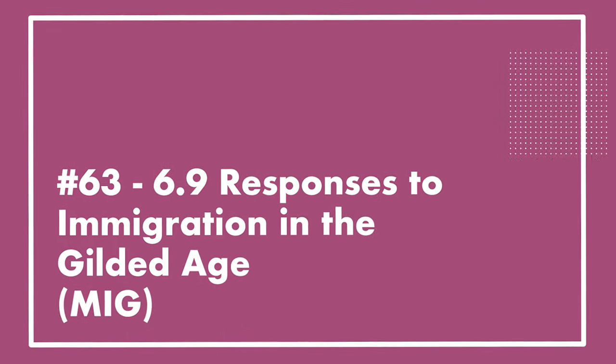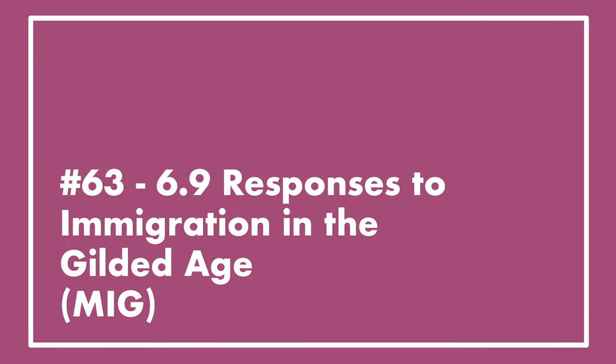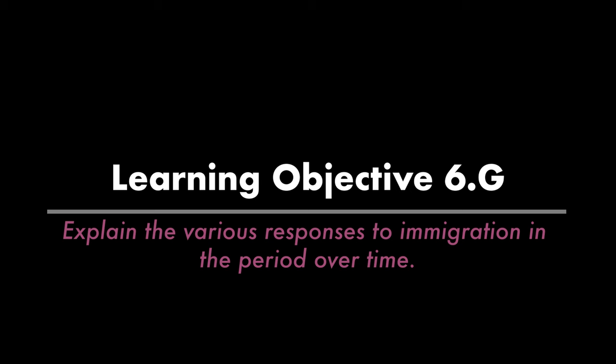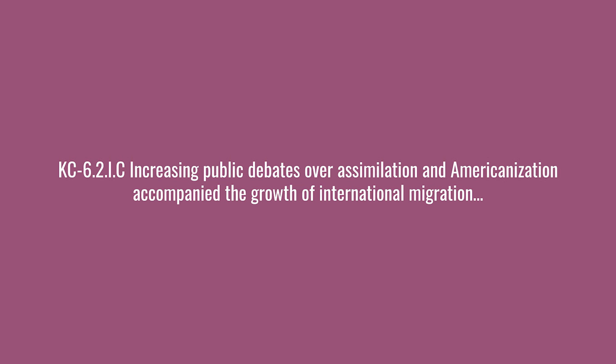Welcome to lecture number 63, Historical Topic 6.9, Responses to Immigration in the Gilded Age, and the theme is Migration and Settlement. The learning objective is to explain the various responses to immigration in the period over time. The first key concept is: increasing public debates over assimilation and Americanization accompanied the growth of international migration.